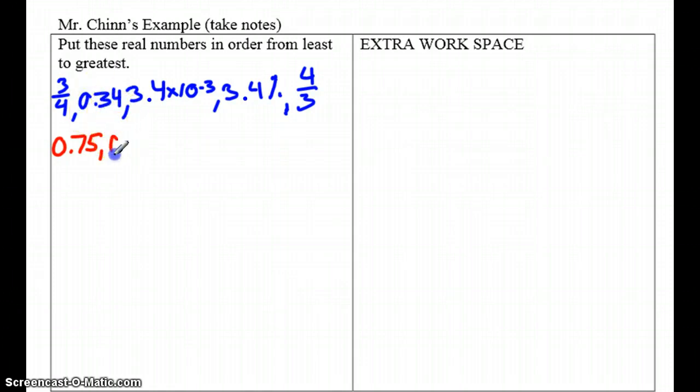The next number, 0.34, that's already a decimal. I don't have to do anything to that. That's nice and easy. It's already the way we want it. So just recopy it.